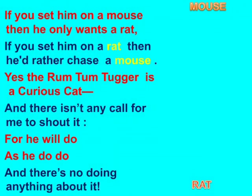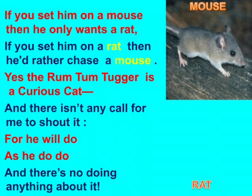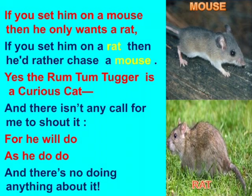If you set him on a mouse, then he only wants a rat. If you set him on a rat, then he would rather chase a mouse. Children, a cat loves to eat rats. And if you set him on a mouse — mouse is a small animal with a long tail; in Hindi, we call it Chuhiya — if this mouse is provided to him, then he only wants to get a rat. And if you give him a rat, then he would chase a mouse. Chase means to follow. If rat is given, he wants to eat mouse. And if mouse is given, he wants to eat rat.